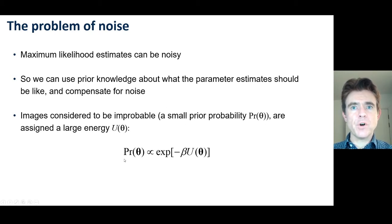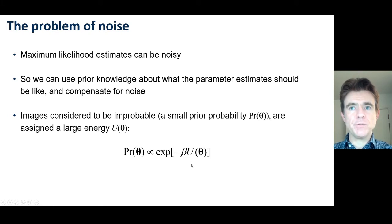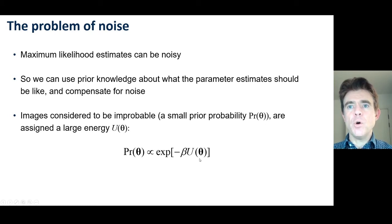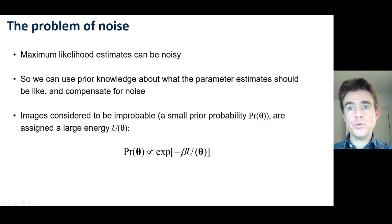This is done via a Gibbs prior, where we define the probability of a given image theta by devising some energy function u, which gives a high value if the input image is something we do not want, such as a very noisy image. If the image theta is one that corresponds to our expectations, then that delivers a small value of u.